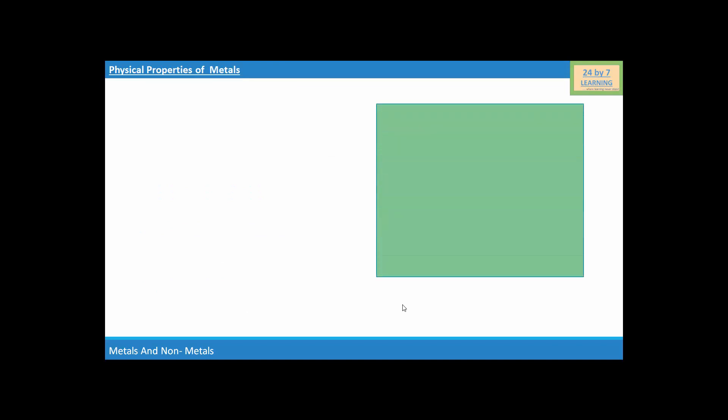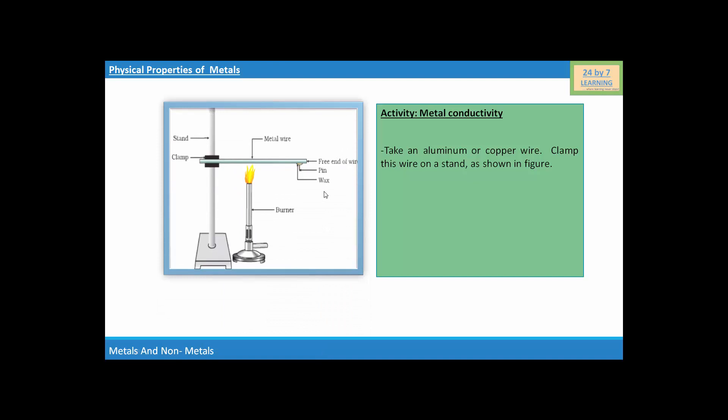Now, here is an activity showing metal conductivity. Take an aluminum or copper wire, clamp this wire on a stand as shown in this figure. You can see here, this is the stand and this is the clamp in the stand holding metal wire. Now, fix a pin to the free end of the wire using wax. Now, heat the wire with a spirit lamp, candle, or a burner near the place where it is clamped.